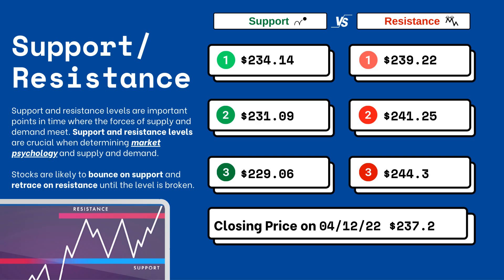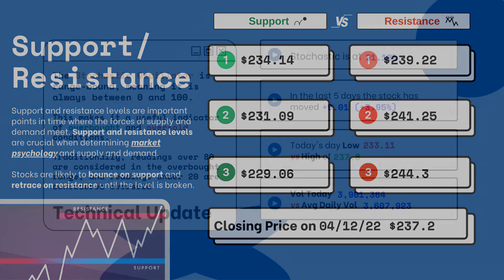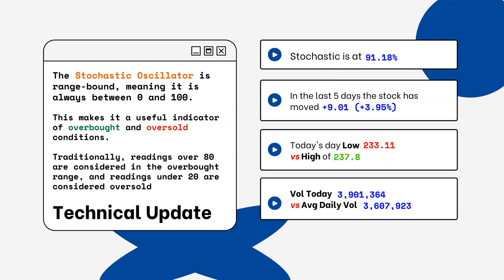These are areas that you want to watch when looking at a particular stock. Stocks typically bounce at support levels and they resist at resistance levels, meaning they'll retrace from that top level. You can see on the right side where the stochastic level is on this particular stock — this is only a technical update.